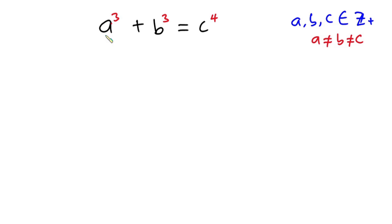Hello everyone! In this video we have this interesting problem. We have a to the third power plus b to the third power is equal to c to the fourth power. And we are saying that a, b, and c belong to integers, where a is not equal to b and b is also not equal to c. And we have to find the values of a, b, and c.